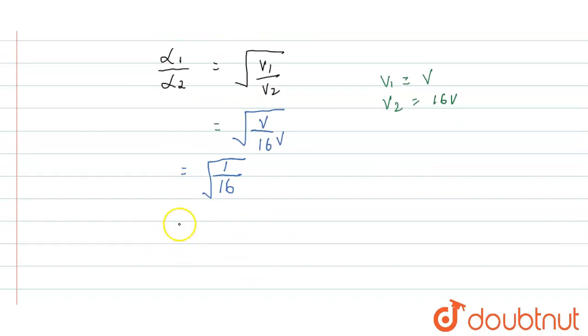So, let us remove the square root. When we remove the square root, you get 1 by 4. So, this is alpha 1 by alpha 2. So, if we take the equation as alpha 2 by alpha 1, then what do we get? You get the answer as 4.